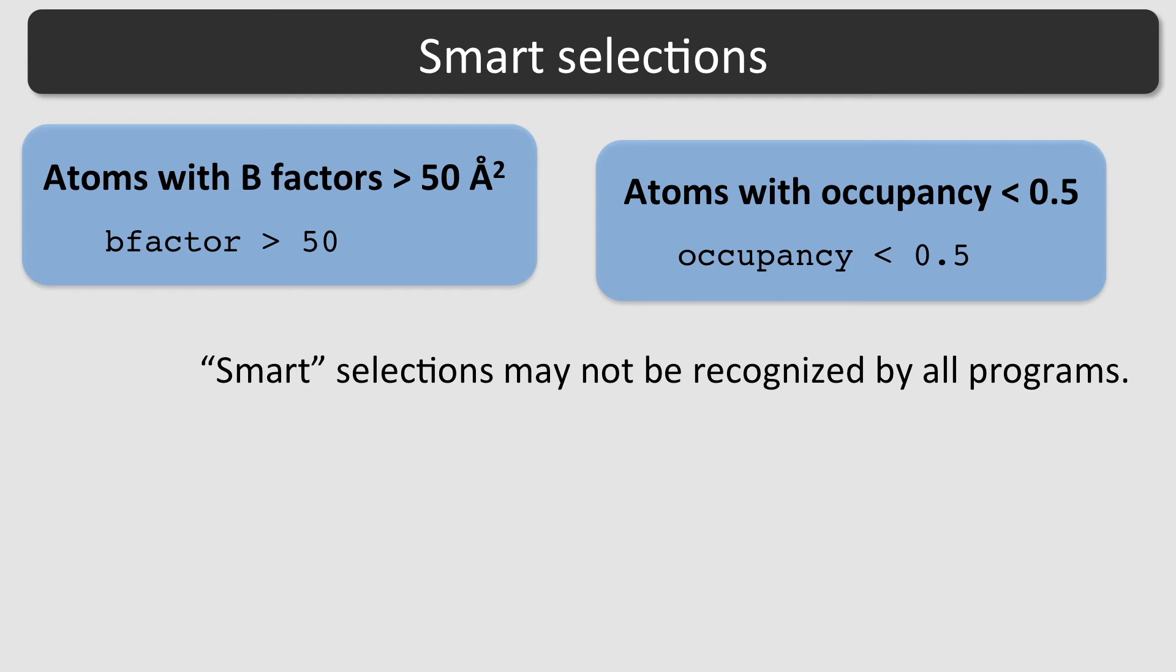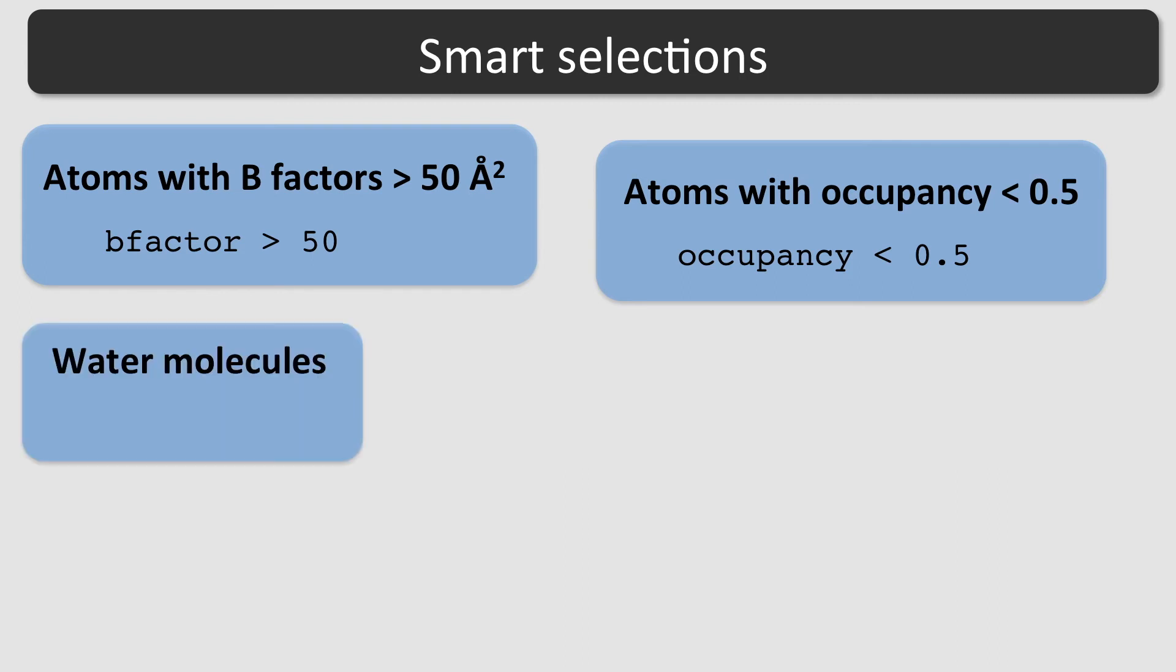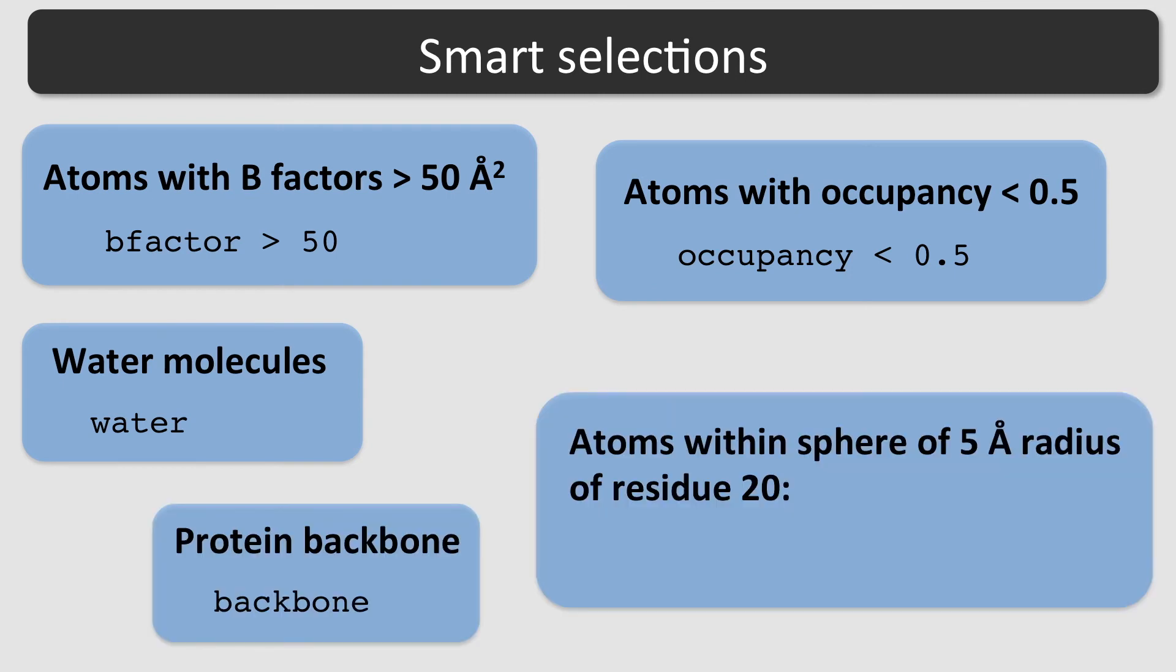To select all water molecules, use water. To select the protein backbone, use backbone. To select all atoms within a sphere of radius 5 angstrom around residue number 20, use within, open bracket, 5, comma, RSEC 20, close bracket.